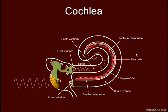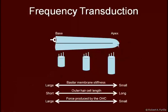Now I'll talk about frequency transduction, looking at the base and apex regions. If we straighten out the cochlea, we can see that at the base the basilar membrane is stiffer, giving a higher resonant frequency there than at the apex. In addition, the outer hair cells are shorter at the base than at the apex, and the force produced by the outer hair cells is greater at the base than at the apex.